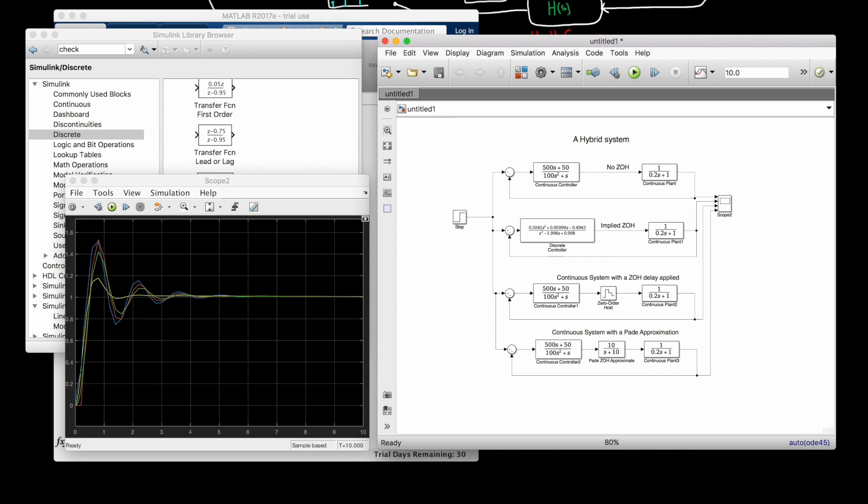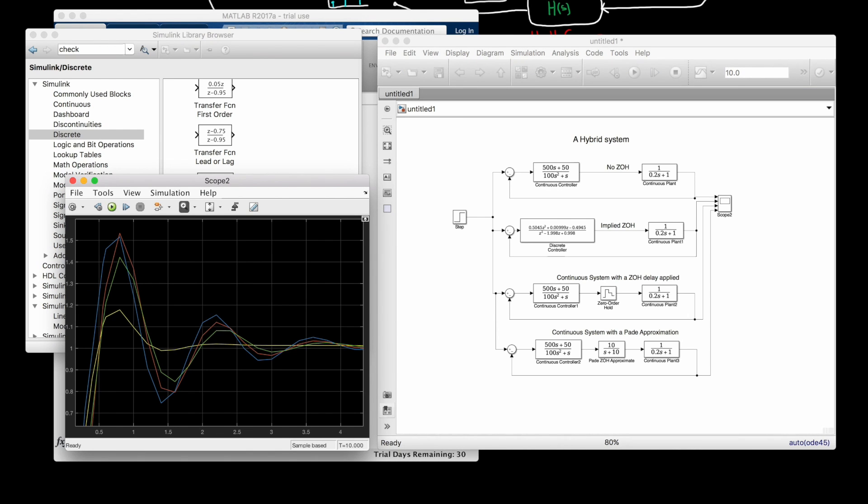But for now, let me just show you the end result for a first-order Pade approximation of the zero-order hold. The new response to the step input is in green. And while it's not perfect, we can see that both the Pade approximation and the included zero-order hold models match fairly well with the hybrid system. At least, both methods are much closer to the hybrid model than just ignoring the effects of the hold altogether. But the model with the Pade approximation has the added benefit of being a completely continuous system. Which means we can design our controller using classical S domain control techniques. And then discretize that controller using something like the Tustin method.